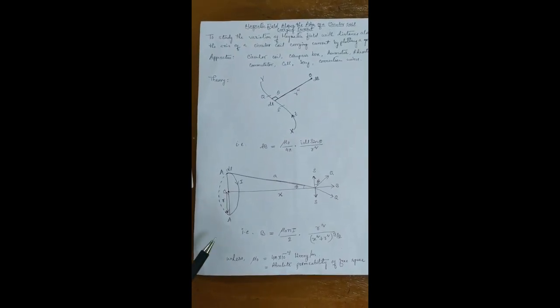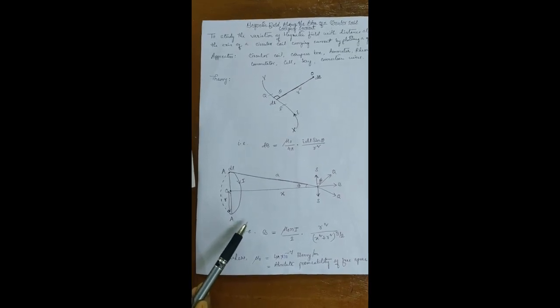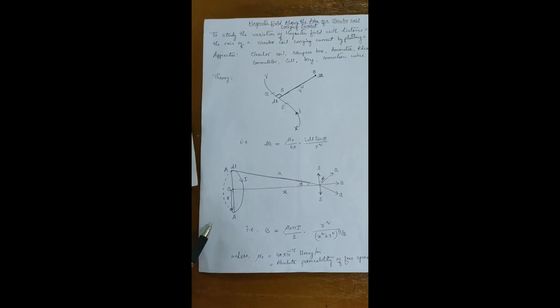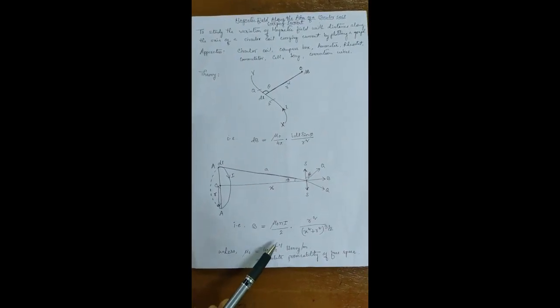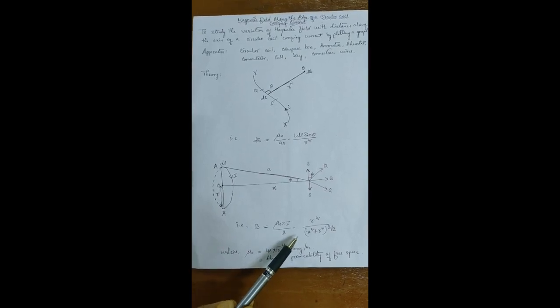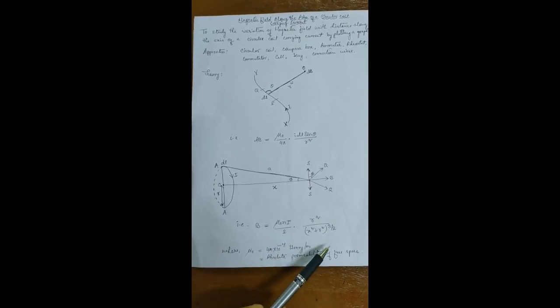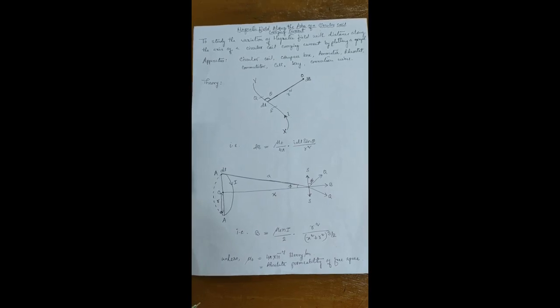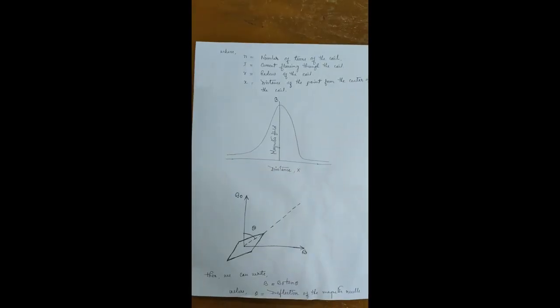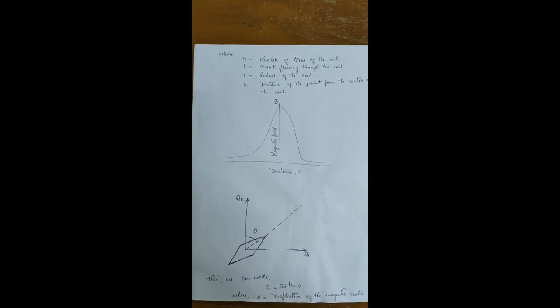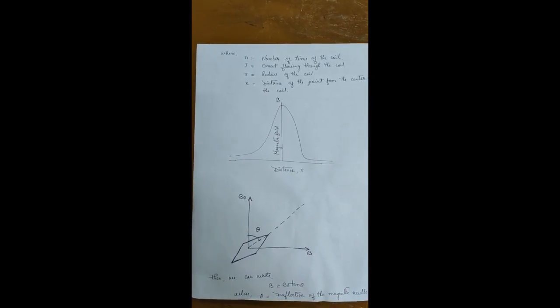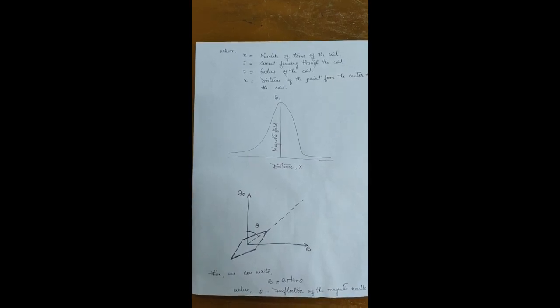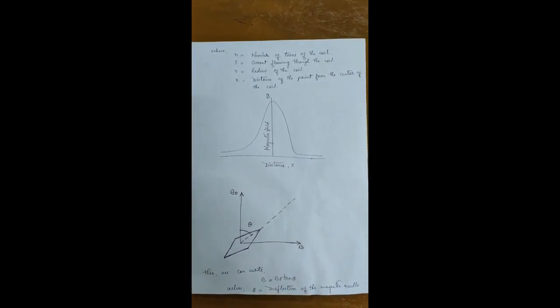By Biot-Savart's law, the total magnetic field at a point which is at a distance x away from the center of the circular coil of radius R having n turns is given by B equals mu₀·N·I by 2 into R² divided by (x² + R²) raised to 3/2, where mu₀ equals 4π × 10⁻⁷ henry per meter is the absolute permeability of free space, N is the number of turns of the coil, I is the current flowing through the coil, R is the radius of the coil, and x is the distance of the point from the center of the coil.